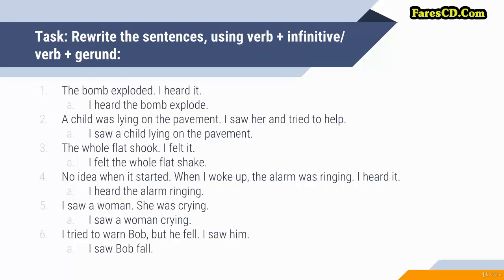Number five: I saw a woman crying. You saw part of the action here. It's not given in the context that you saw what made her distressed, why she started crying, how she started crying, and how she stopped after that. So you just saw part of the action. When you want to express that you saw part of the activity, you use verb of senses plus verb plus -ing.